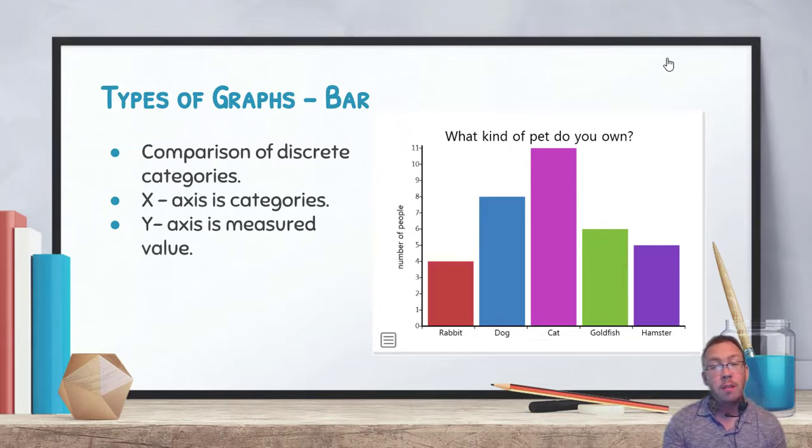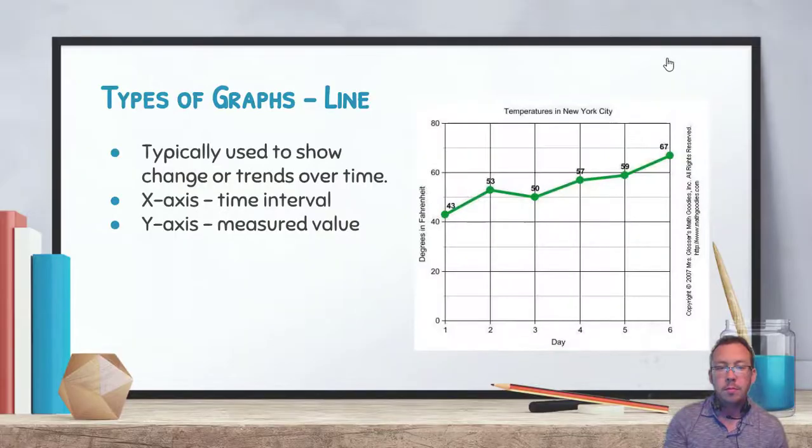So the first type of graph we're going to look at is what's called a bar graph, and that's one that most people are probably familiar with. It's a comparison of categories, so they're completely separate from one another. The x-axis is typically the categories. Remember, the x-axis is the horizontal axis and the y-axis is your vertical axis. In this one, the y-axis is the measured value. So here there's a survey done about what type of pet you own. You have a nice little list here of the different number of animals or different types of animals and the number which each one owns. So that data is best shown in a bar graph. We have specific categories and a measured value that we are comparing against.